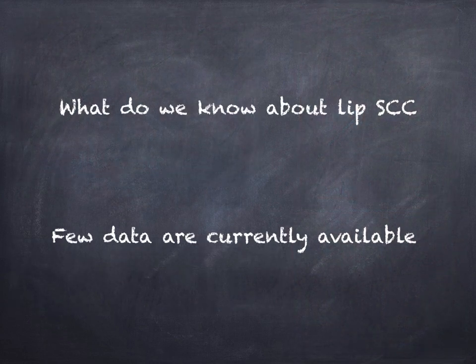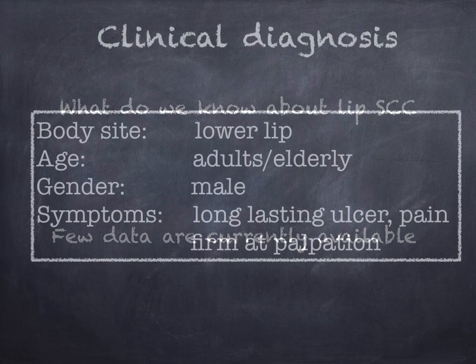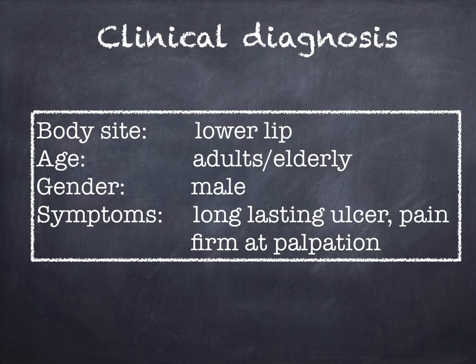But what can we see about the squamous cell carcinoma located on the lip? There are extremely few data about these dermoscopic features. We know well that from a clinical point of view, squamous cell carcinoma arises preferentially on the lower lip of adults and elderly with a male predominance, and usually these lesions have the history of being a long-lasting ulcer. Sometimes pain is associated, and if we touch the lesion it is quite firm at palpation.